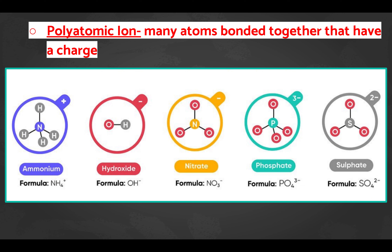A polyatomic ion means many atoms bonded together that have a charge. Examples include ammonium (NH4+), hydroxide (OH−), nitrate (NO3−), phosphate (PO4³−), and sulfate (SO4²−). The charge applies to the entire group of atoms — think of polyatomic ions like little packages you can't break up.